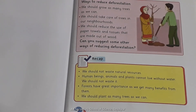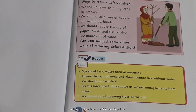How can we reduce deforestation? ہم deforestation کو کیسے کم کر سکتے ہیں؟ Very good: we should grow new plants — ہمیں نئے پودے لگانے چاہئیں; we should reduce the use of wood — اور لکڑی کا استعمال کم کرنا چاہیے۔